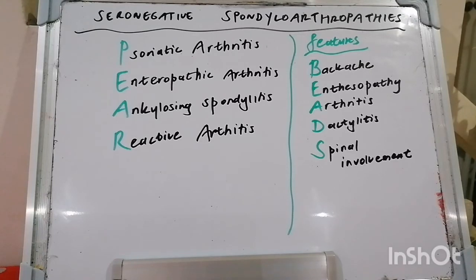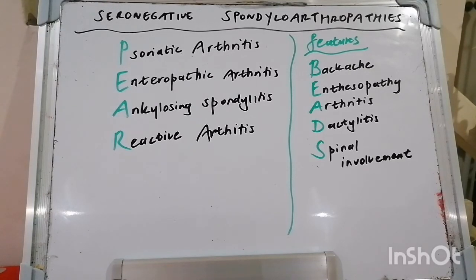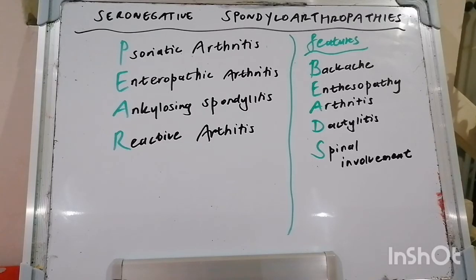HIV serology if you suspect reactive arthritis. Chlamydia PCR if you suspect reactive arthritis. Stool culture if you suspect reactive arthritis as well. Then HLA-B27 has an association with seronegative spondyloarthritis, most commonly ankylosing spondylitis. And of course, if there's a joint effusion, you want to do arthrocentesis and send off a cell count with differential, culture, gram stain, and crystals.